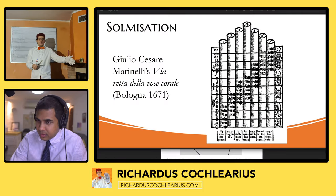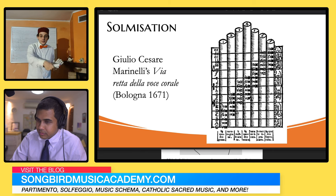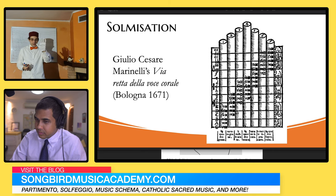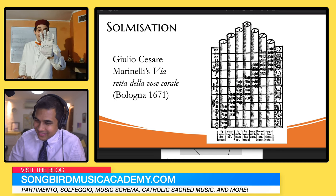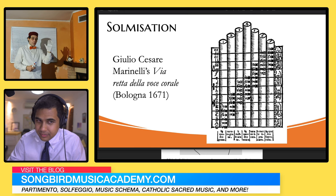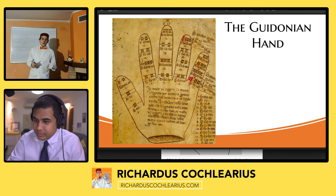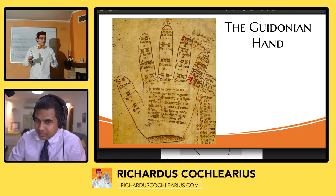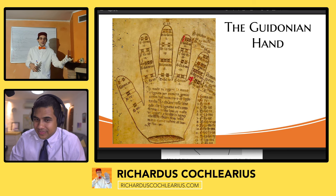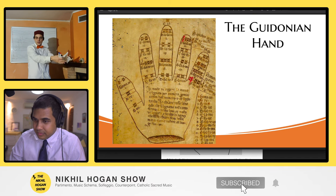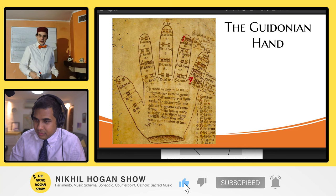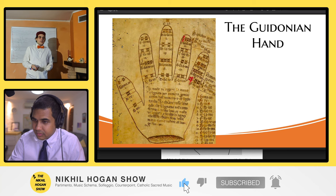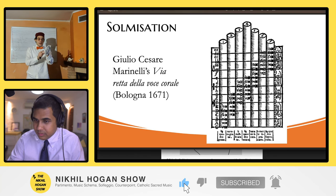If we take this system and transfer it onto our hand, we obtain the Guidonian hand. The Guidonian hand is exactly this system, but transposed in a way that if you memorize it, when you are singing in the chorus or on other occasions, you can look at your hand and you don't need to have a table or a piece of paper with this picture. So this is the practical purpose of the Guidonian hand — everything you can see completely in Marinelli's picture, you have on your hand.